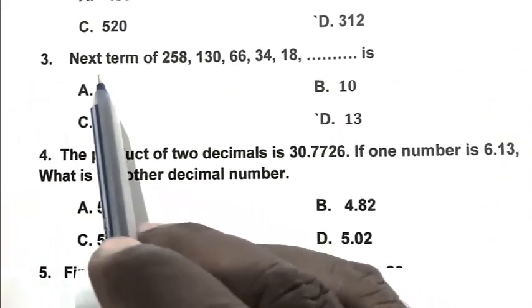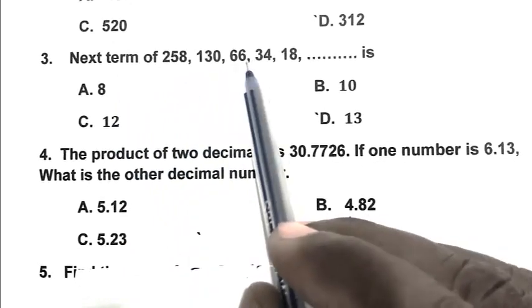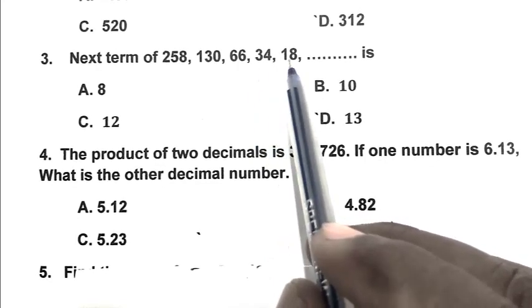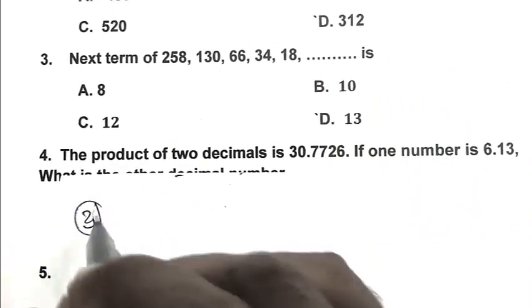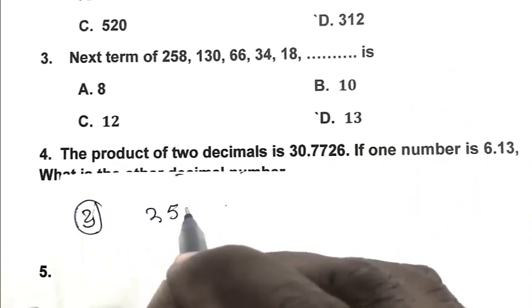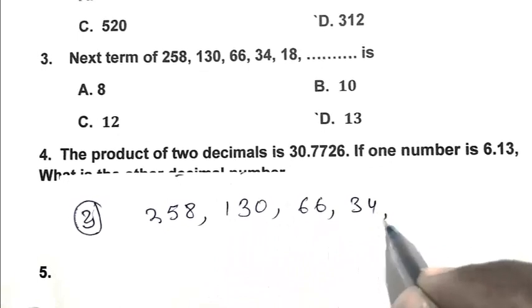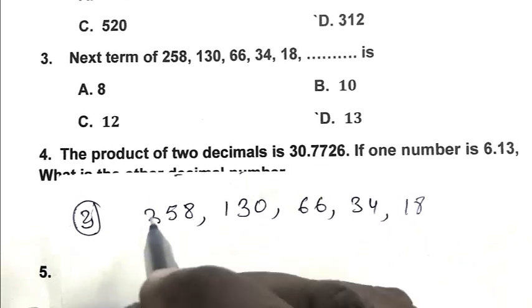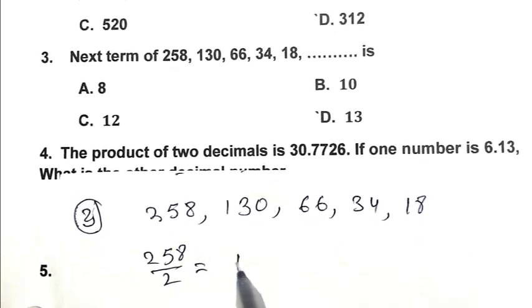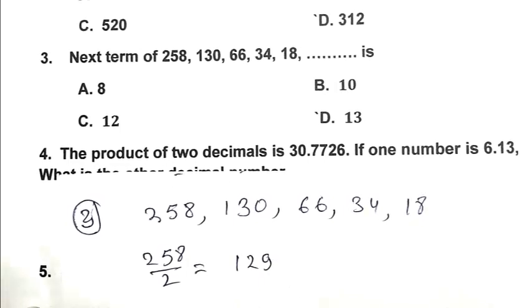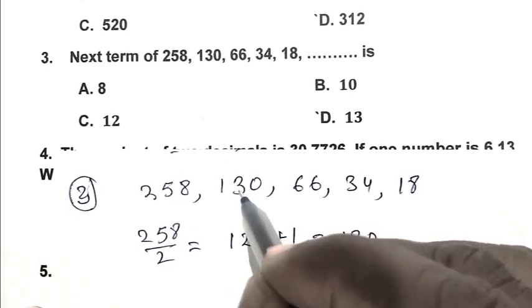Question number 3. Next term of 258, 130, 66, 34, 18. After that the number we have to find. We divide first number 258 by 2 to get 129. If we add 1 with that we get 130. That is second term. So if we divide 130 by 2 we get 65 and add 1 we get 66. That is third term.